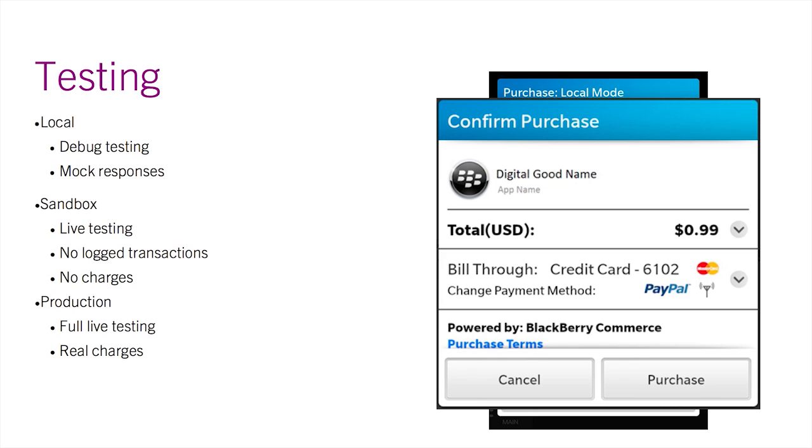Sandbox testing is the next step in testing. This is what you would do after all the debugging has been completed and you only need to verify that all the digital goods are added to the vendor portal properly. With sandbox testing, the workflow is just like a real user would experience when making a purchase, with two main differences. The first: there are no transactions logged in the backend. This means that retrieving past purchases will not work and transaction IDs will all be zero.